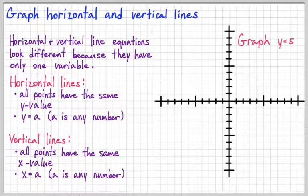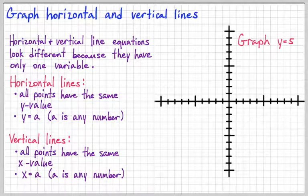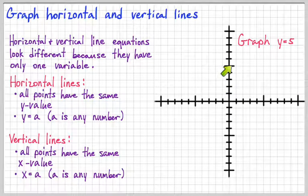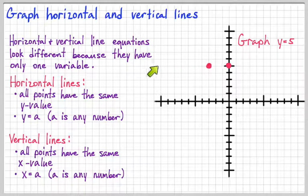So let's graph one together. We will graph y equals 5. What I want to do is plot two points that have a y value of 5. The y-intercept is an easy one, so I can find a place on the y-axis where the y value is 5, put a dot there, and now I can find any other point where the y value is 5 and draw my line.